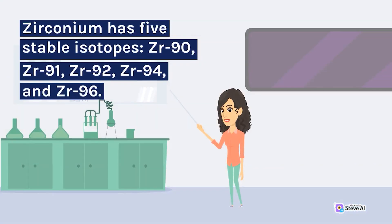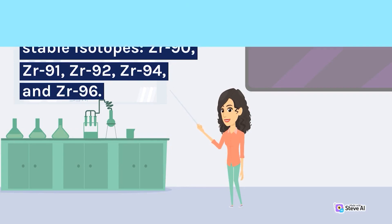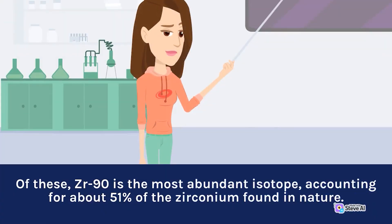Zirconium has 5 stable isotopes: Zr-90, Zr-91, Zr-92, Zr-94, and Zr-96. Of these, Zr-90 is the most abundant isotope, accounting for about 51% of the zirconium found in nature.